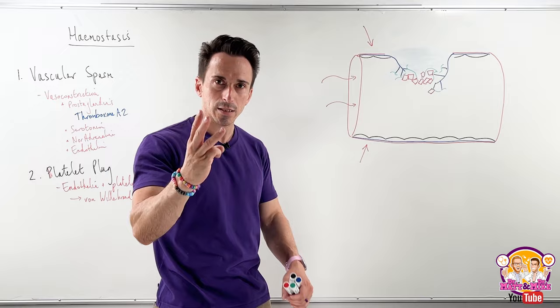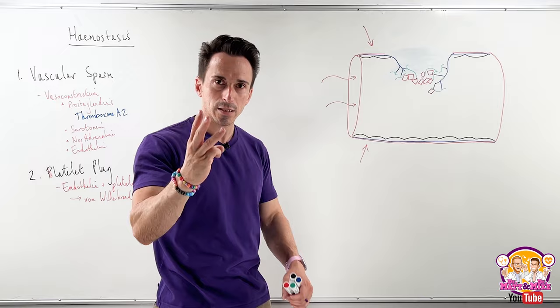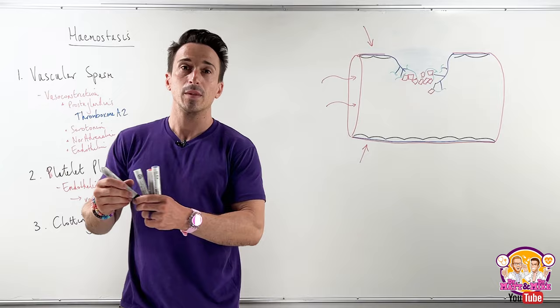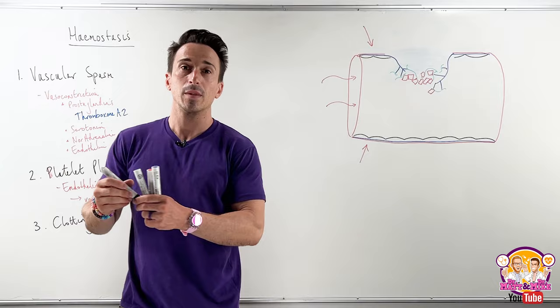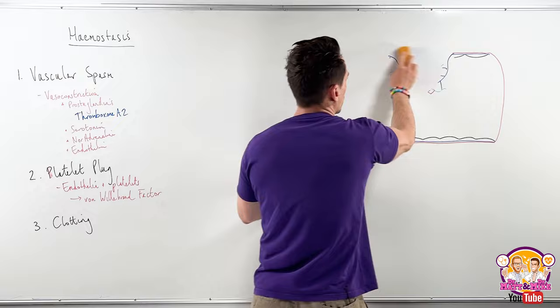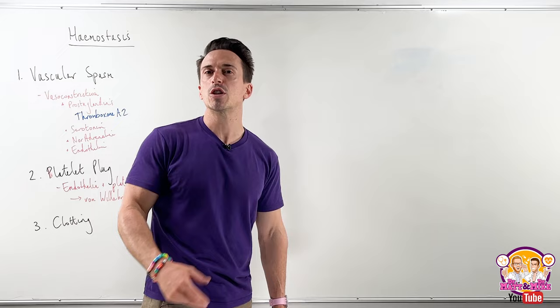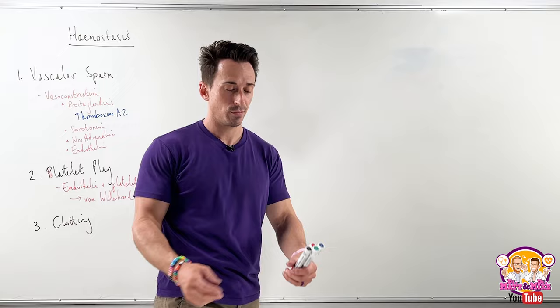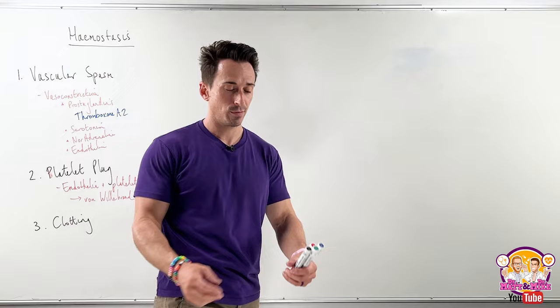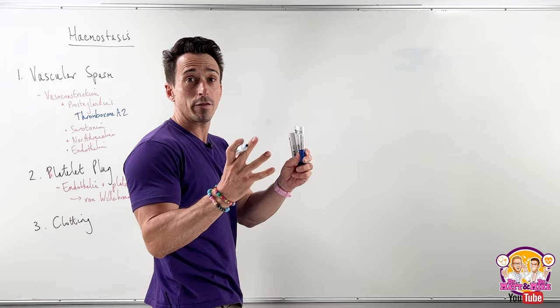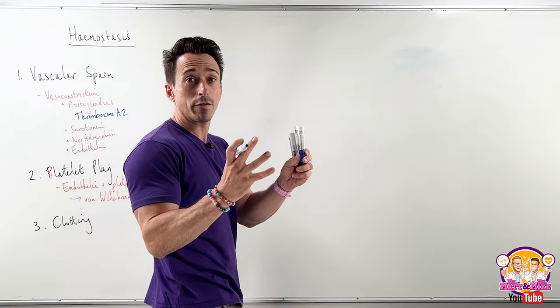This platelet plug that's formed isn't the clot. Phase three of hemostasis is clotting, and this is where students start to have difficulty — what we call the clotting cascade. At the end of the day, we want to create a clot. We want to take fibrin fibers, embed and mesh them together — that's the clot we form. This allows blood to stop leaking out and facilitates the healing process.